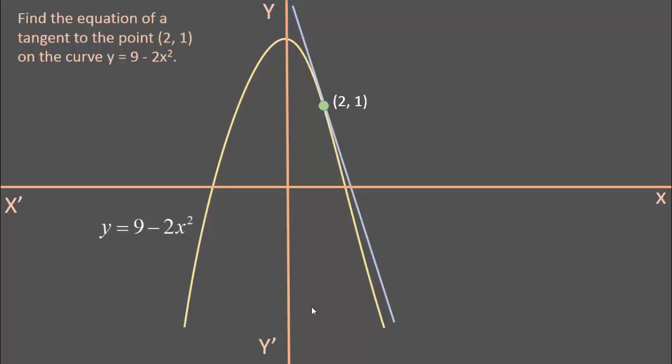A tangent is a straight line. If we know a point and the slope of a straight line, we can obtain its equation by using the formula (y - y₁) = m(x - x₁). In this problem, we know the point on the tangent. It is (2,1). What we require is its slope.